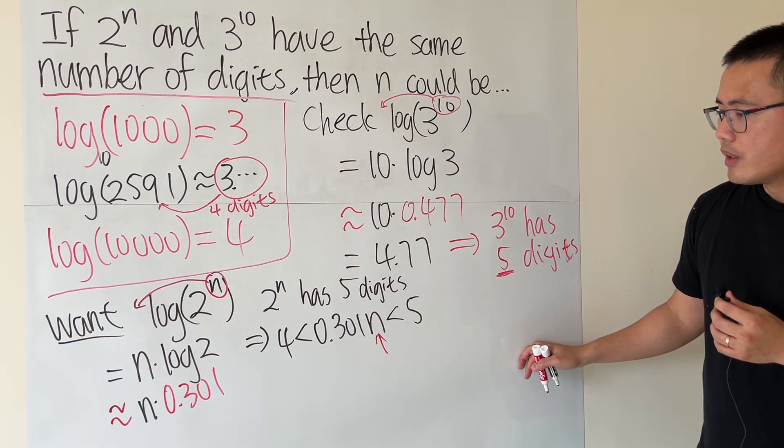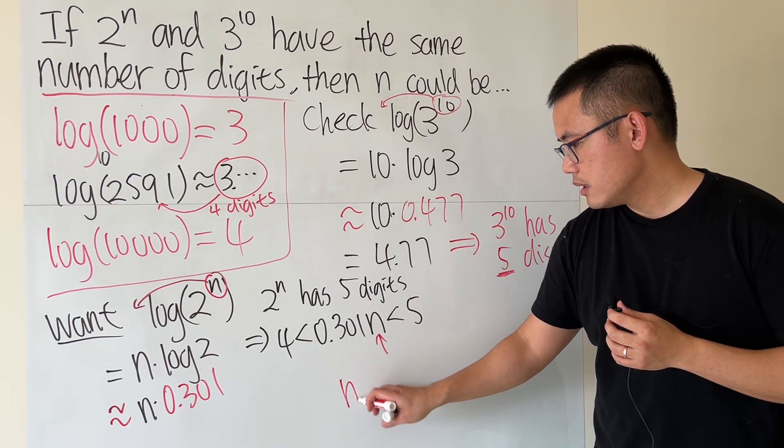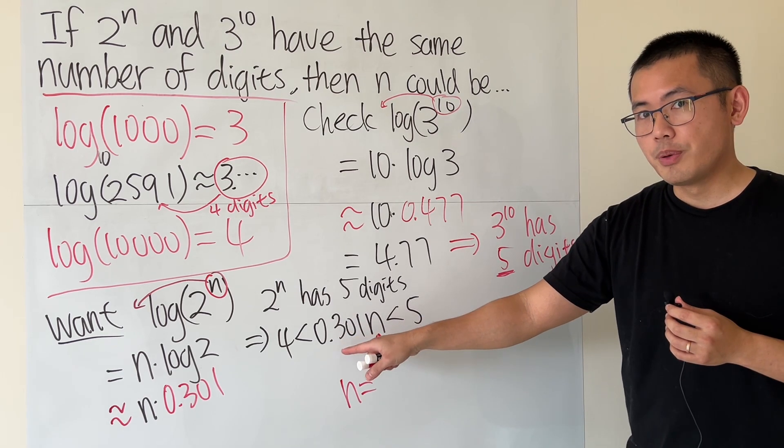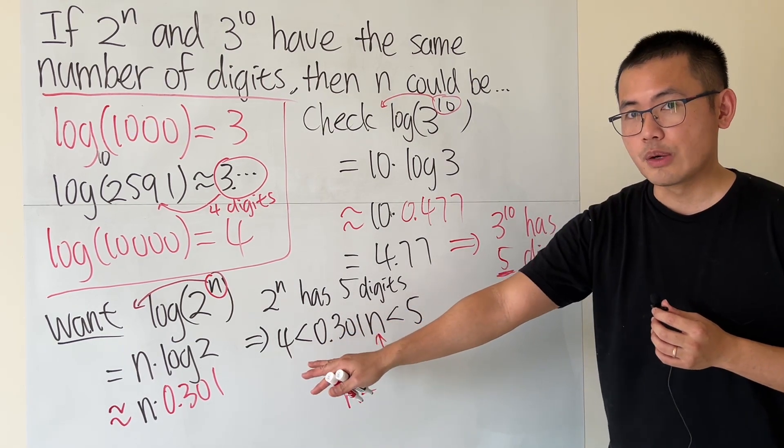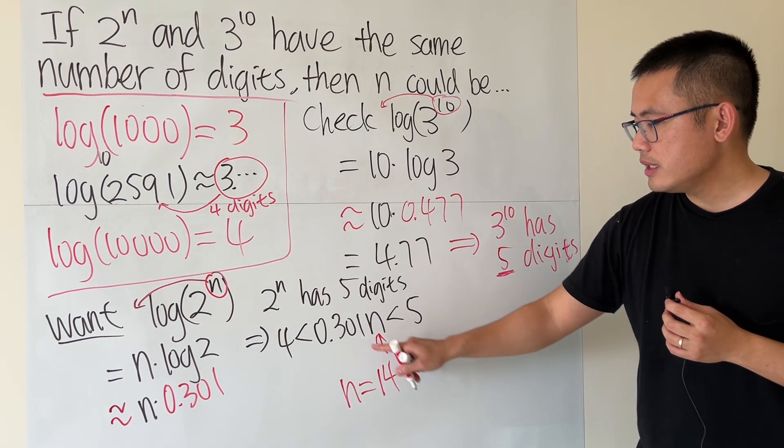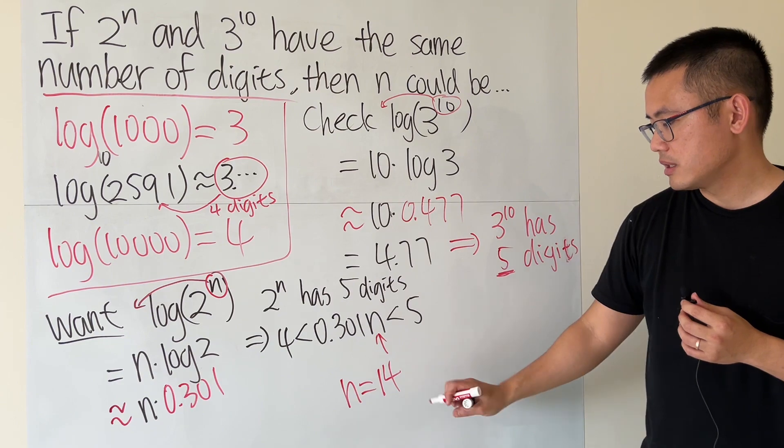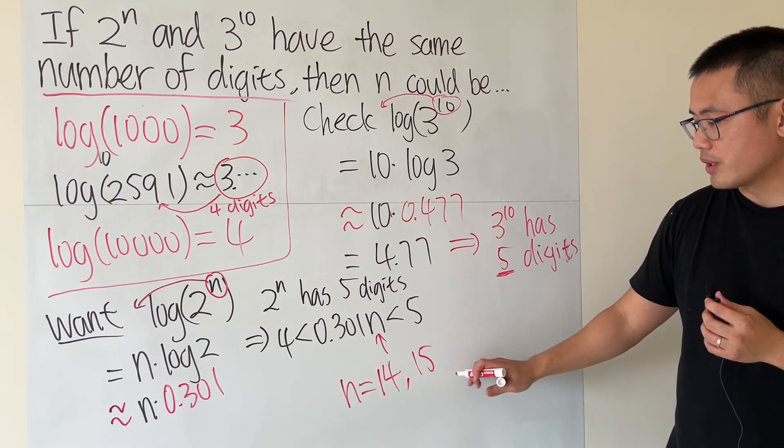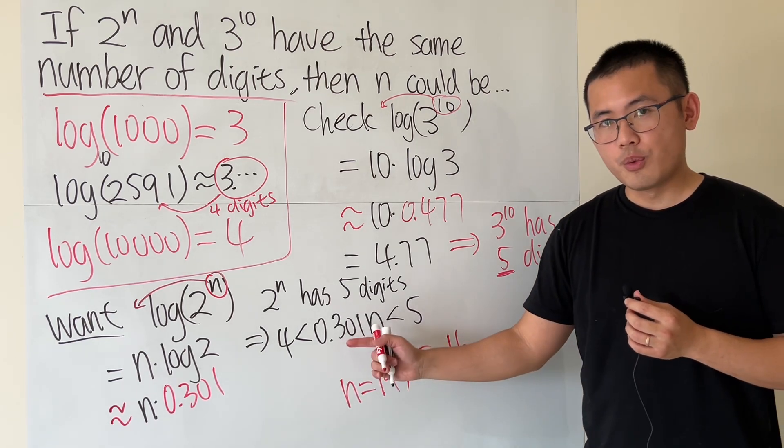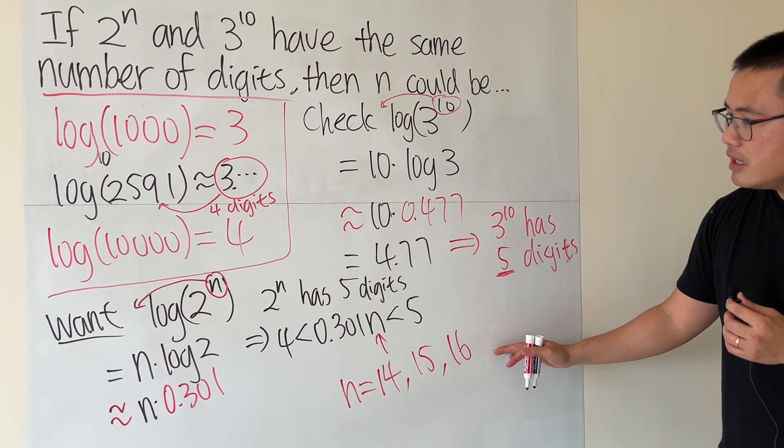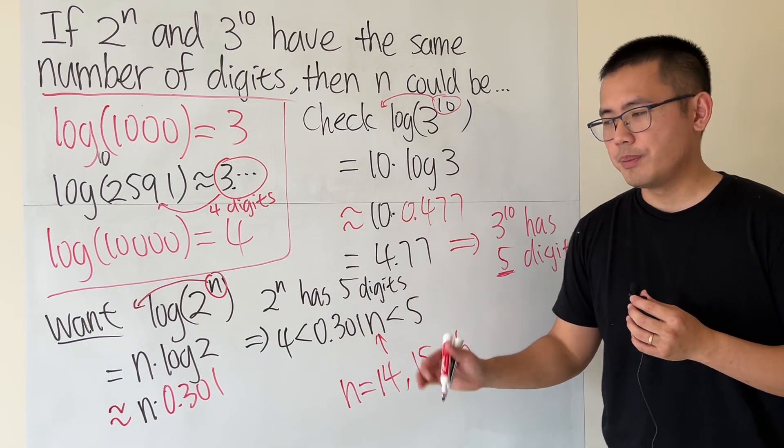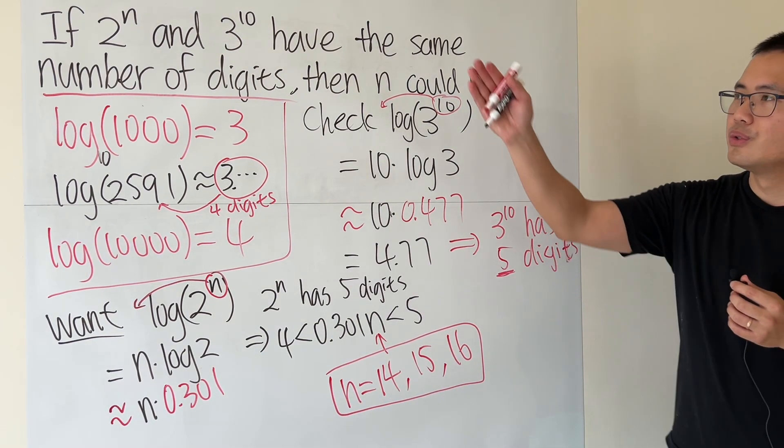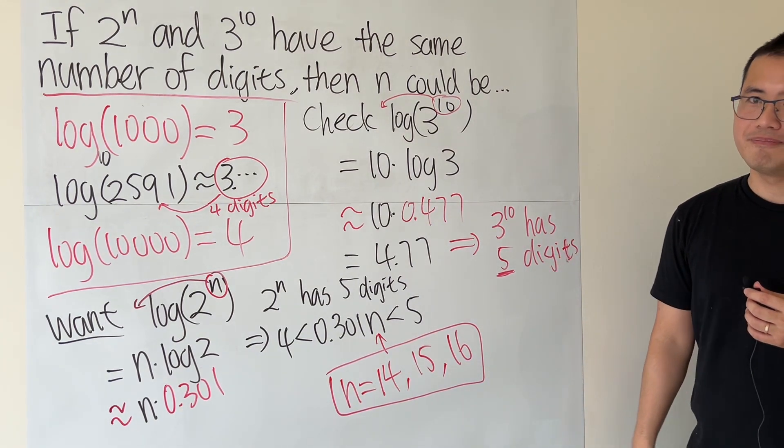So the first number, if you put 13 for n, 13 times 0.3, the 1 doesn't really matter. If it's 13 times 0.3, that's 3.9. That's less than 4, so that's not what you want. But if it's 14, 14 times 0.3 is 4.2. So it works. If it's 15, 15 times 0.3 is 4.5. It also works. And then 16 times that is 4.8, right? So it still works. If it's 17 times 0.3, that will be 5.1. That will be too big. So these are the three possibilities for n. That will give you 2^n to have 5 digits. And that's it.